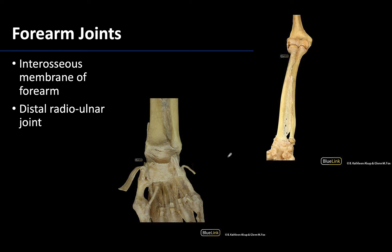The other two joints formed by the radius and the ulna are the interosseous membrane and the distal radio-ulnar joint. The interosseous membrane — only observable in deepest dissections — is a sheet of connective tissue connecting the shafts of the radius and the ulna. This is actually not a synovial joint but a fibrous joint, and it further allows the actions that can occur between the radius and the ulna. The distal radio-ulnar joint is located just above the wrist, formed by the ulnar notch of the radius and the head of the ulna. All three radio-ulnar joints allow the movements of pronation and supination.